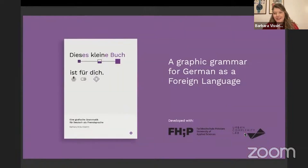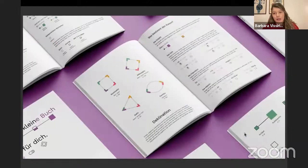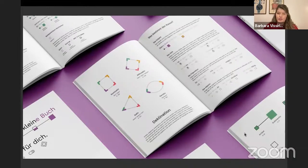Today we're going to talk about a project that lies exactly at the intersection of these three areas, which is my book published last year: 'Dieses kleine Buch ist für dich.' This little book was a project developed with the University of Applied Science Potsdam and their research group, the Urban Complexity Lab. It's a book with over 200 pages where we explain German grammar to non-native speakers through a new visual system that aims to make grammar structures visible, especially for adults who need to achieve an advanced level.